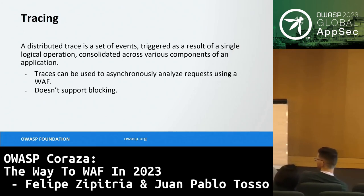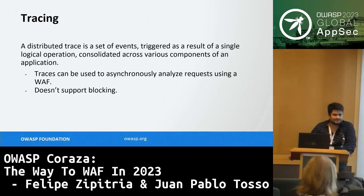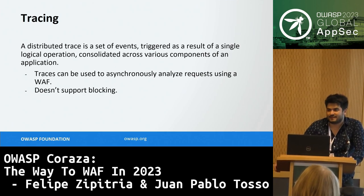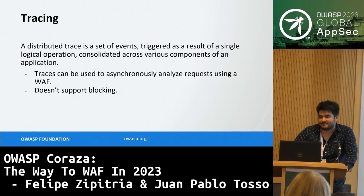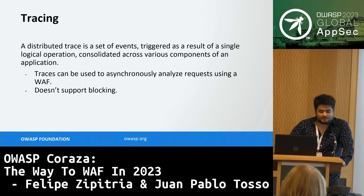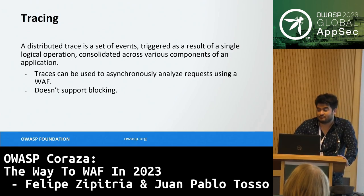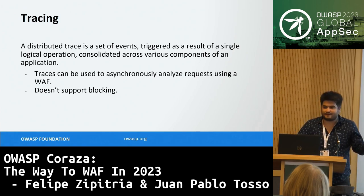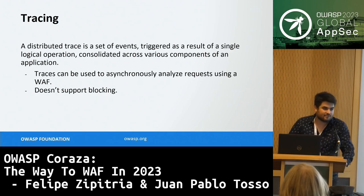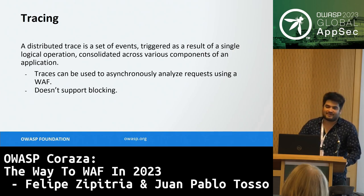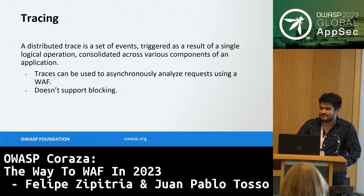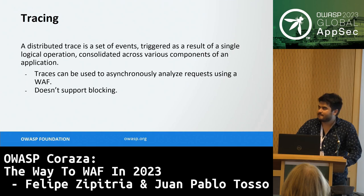Tracing is a recent technology used to transform metrics and data into a data structure handled by a collector that does post-processing to generate statistics. Companies are making use of traces to generate WAF results — a trace containing all the data of a web request can be enriched with web application firewall rules. This also doesn't support blocking; we're talking about asynchronous mechanisms. Most modern web servers provide tracing capabilities, so if you have a tracing collector with a WAF processor, you can automatically connect your WAF asynchronously to your web applications.